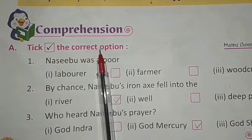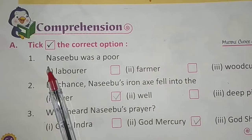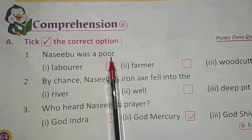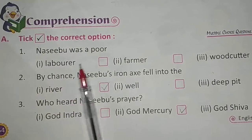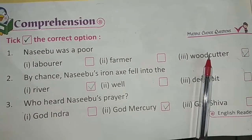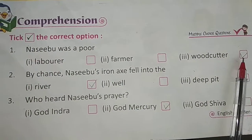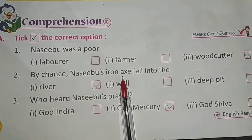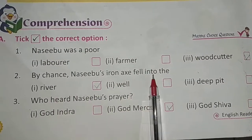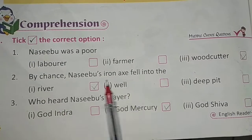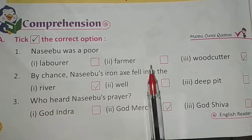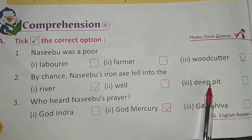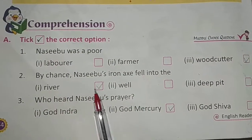First of all, take the correct option. First one is: Nasibu was a poor ___. Nasibu ek poor kya tha? Laborer, farmer, ya woodcutter? Kya tha woh? Woh ek woodcutter tha. By chance, Nasibu's iron axe fell — Nasibu ki iron kahaan par gir gai thi? River, well, ya deep pit? Kahaan gir gai thi? River mein.